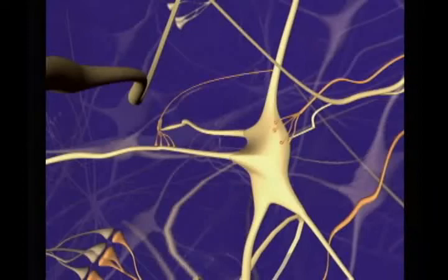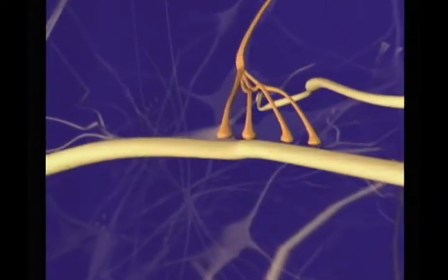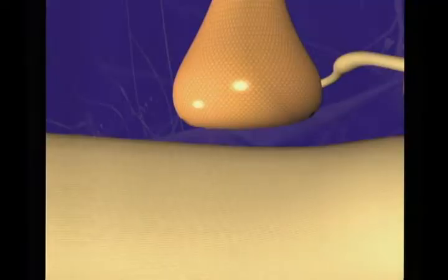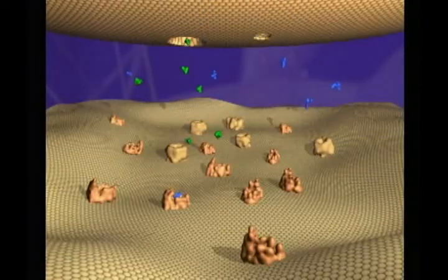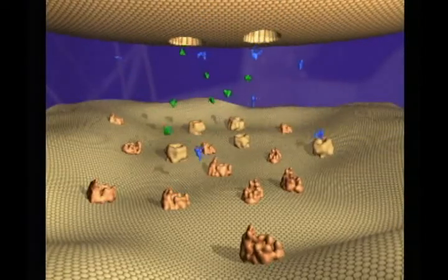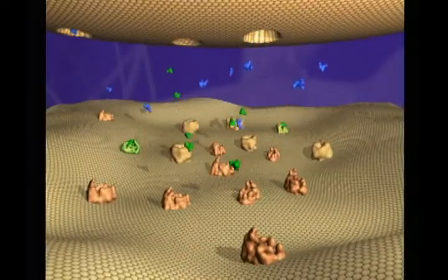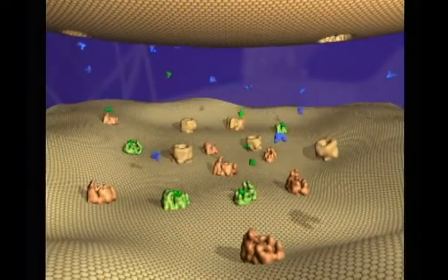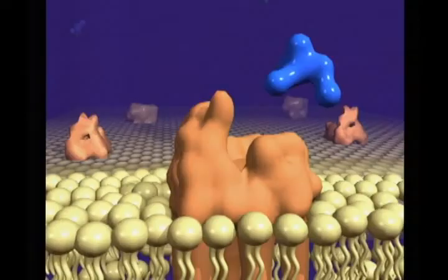Between the neurons is a gap called the synapse. Information passes across a synapse through the release of different chemicals called neurotransmitters. They diffuse across the synapse to the receptor proteins embedded in the membrane of the receiving cell.